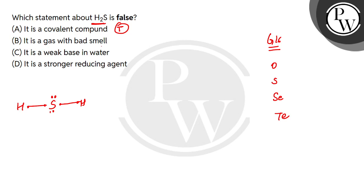It is a gas with bad smell. It is a very pungent smell. It has a rotten egg-like smell. So it has a very bad smell on gas. So this is the B-option statement.